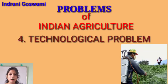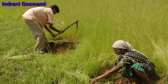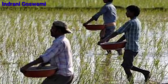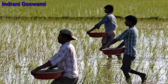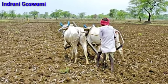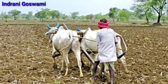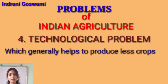Number four is technological problems. Still in our country, farmers are mostly dependent on obsolete — old and primitive — methods of farming. They don't like to use machinery and modern equipment; they still depend on bulls and manpower to produce crops. This cannot produce as many crops, so agricultural productivity is very less in our country.